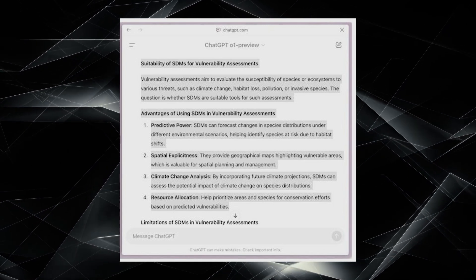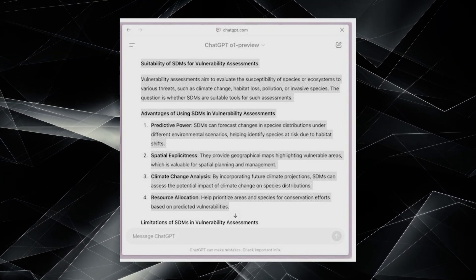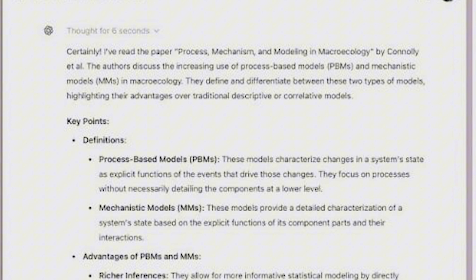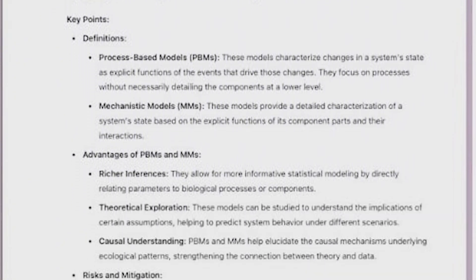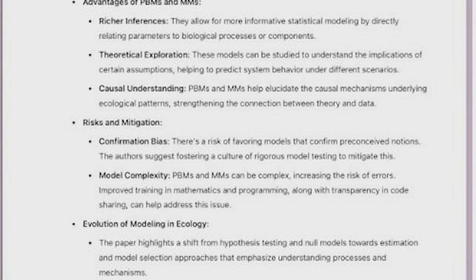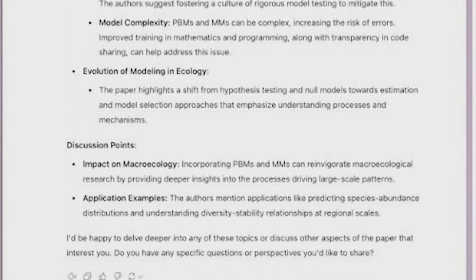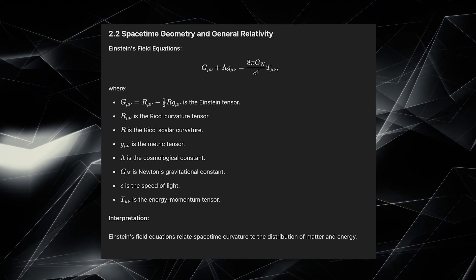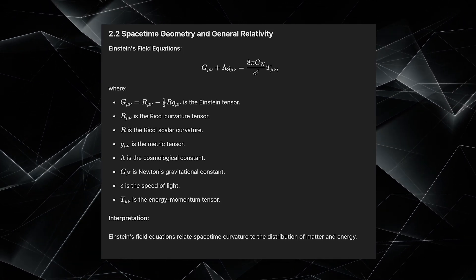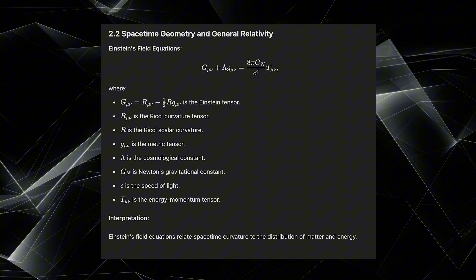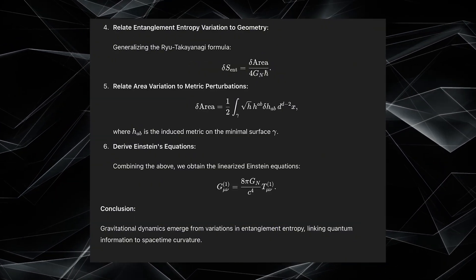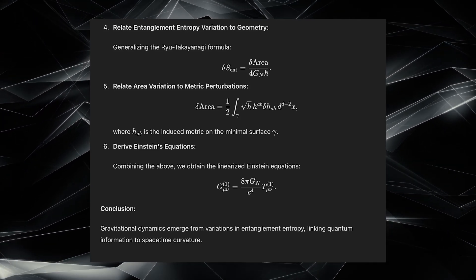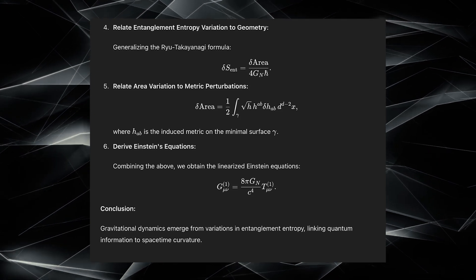One of the most impressive features of the Zero-One models is their ability to reason through complex problems. This isn't just about regurgitating information or following pre-programmed rules. These models can analyze challenges, break them down into components, and work through solutions step-by-step, much like a human expert would. For example, in physics, the Zero-One preview can tackle problems involving quantum mechanics or relativity theory. It doesn't just provide answers, it can explain the reasoning behind its solutions, showing its work like a seasoned physicist. This level of depth and transparency is crucial for building trust in AI systems, especially in scientific fields where understanding the process is just as important as getting the right answer.